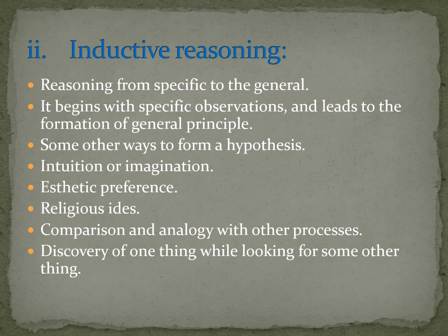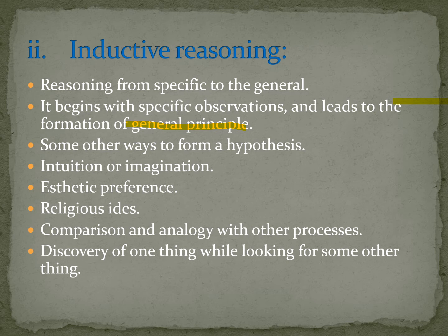Inductive reasoning moves from specific to general. It begins with specific observations and leads to the formation of general principles. For example, when we know that sparrows have wings and are birds, and then we observe eagles, hawks, and parrots also have wings and are birds, we conclude that all birds have wings.